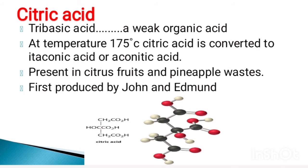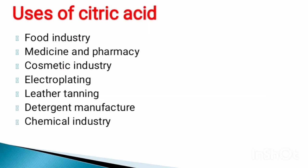Citric acid was first isolated from lemons, which contain seven to nine percent citric acid. Today, 99 percent of the world's citric acid comes from microbial fermentation.